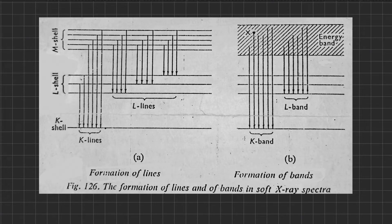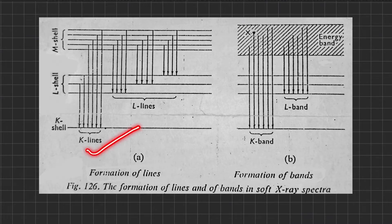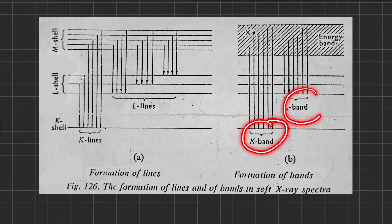Electronic movements into the K shell give rise to K lines in the X-ray spectrum; similarly, electrons moving into the L shell will give L lines, and so on. The resulting X-ray spectra provide extremely interesting results. If the matter involved is present as a vapor at low pressure, a complete line spectrum is obtained. But as the pressure is increased and atoms get closer together, the K lines and L lines merge together to form bands.